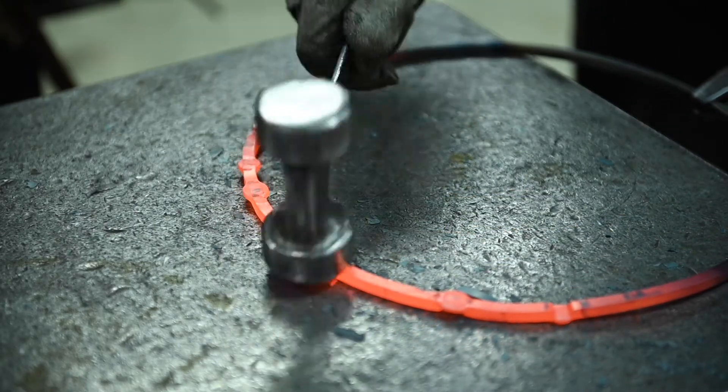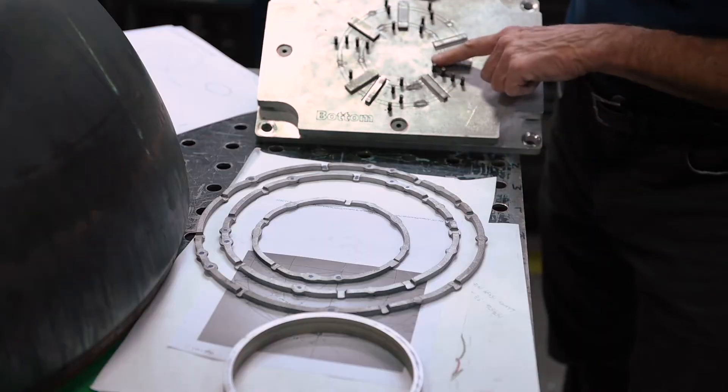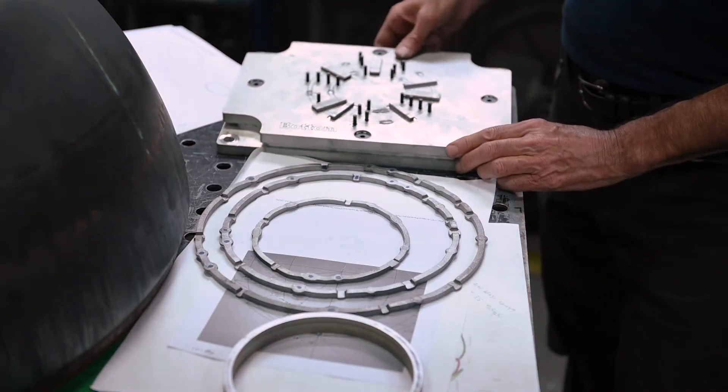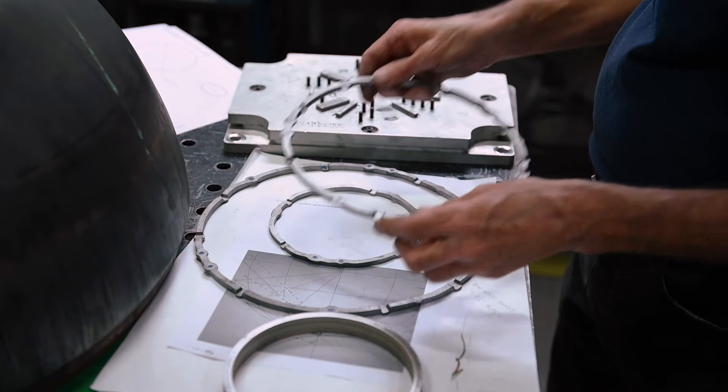This is tool steel. So it's coming down also from the bottom and also from the top. So it's going to impression both sides at the same time.